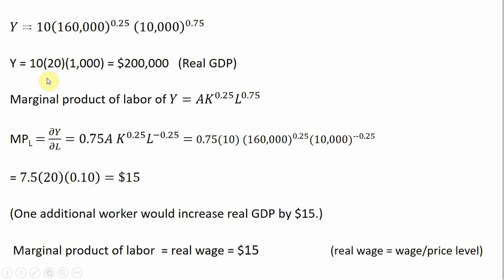Simplifying: 10 times 160,000 to the 0.25 power is 20, and 10,000 raised to the power of 0.75 is 1,000. Multiplying all this together, we have an economy with real GDP of $200,000.